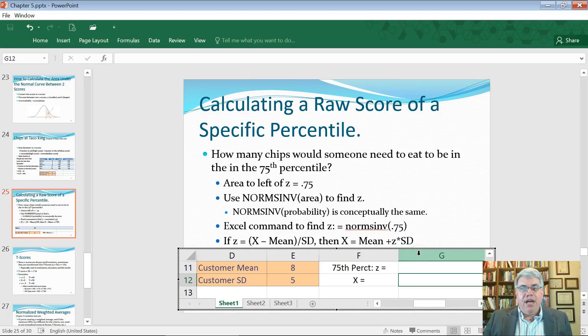Let's look at how we calculate a raw score that corresponds to a specific percentile when we've got a normally distributed variable. For example, let's go back to our chips example where the average customer eats eight chips with a standard deviation of five. That means most customers eat between 3 and 13 chips.